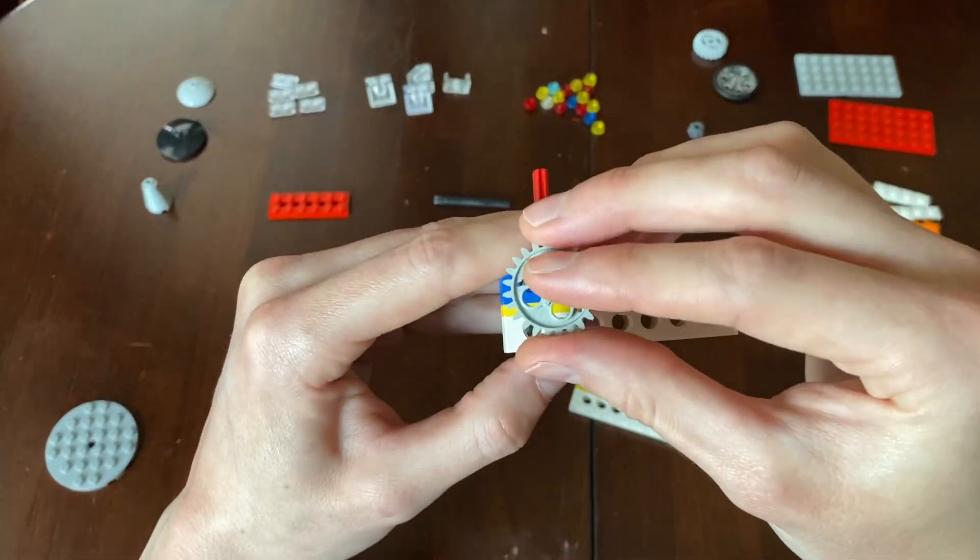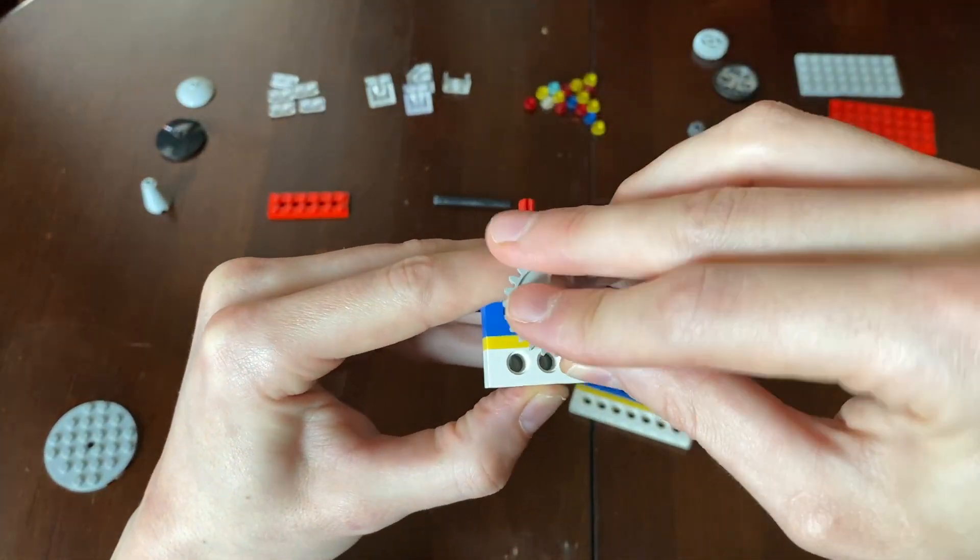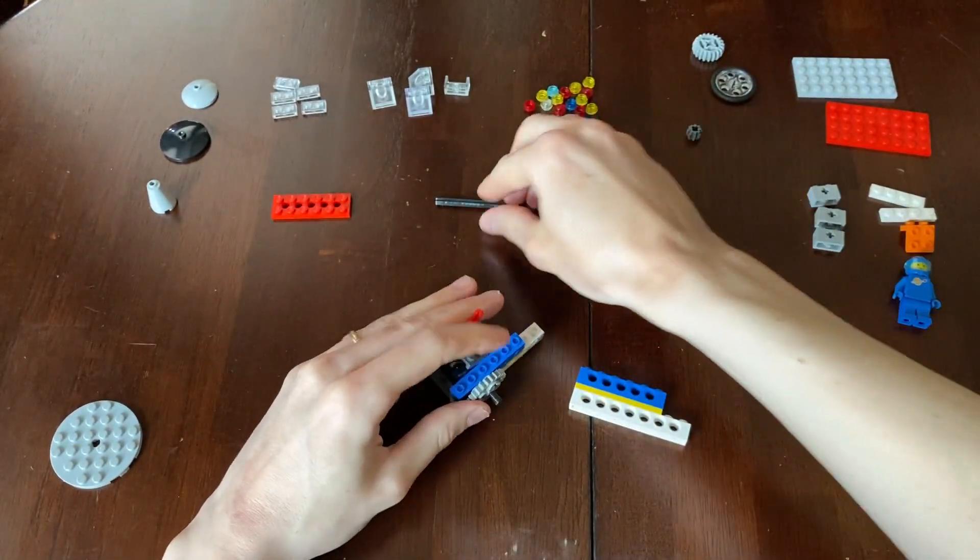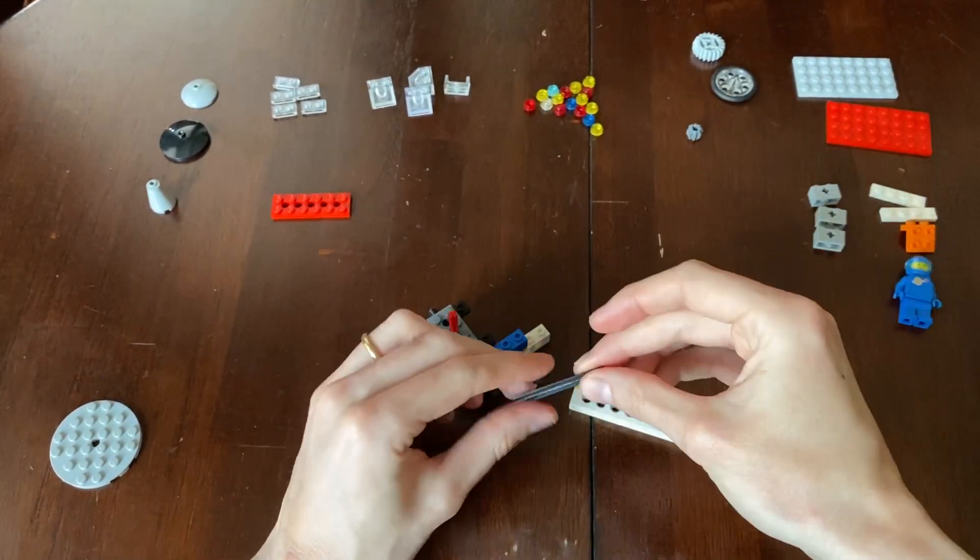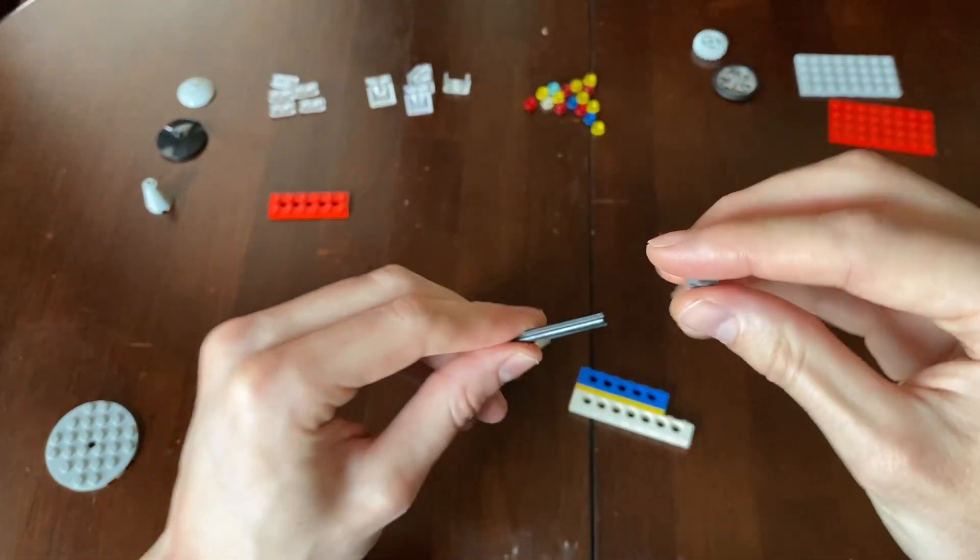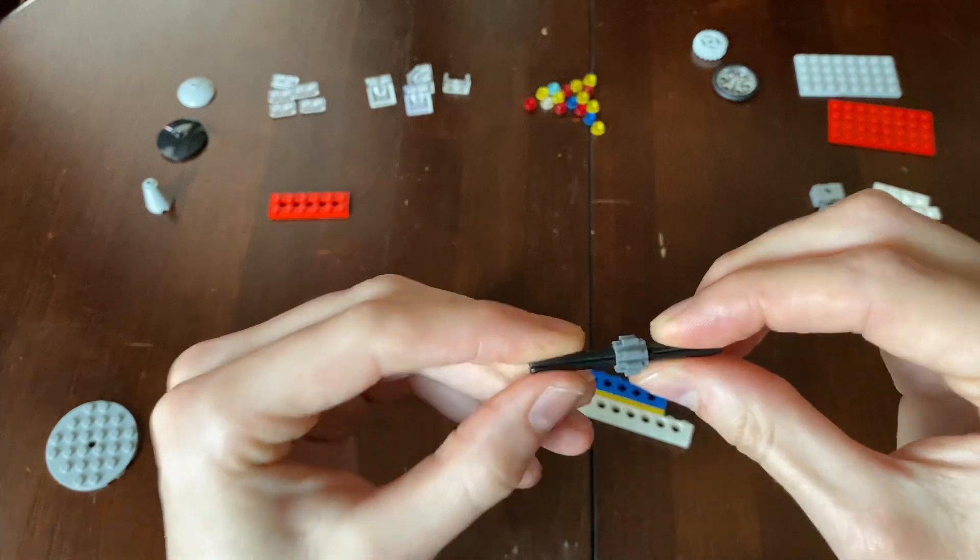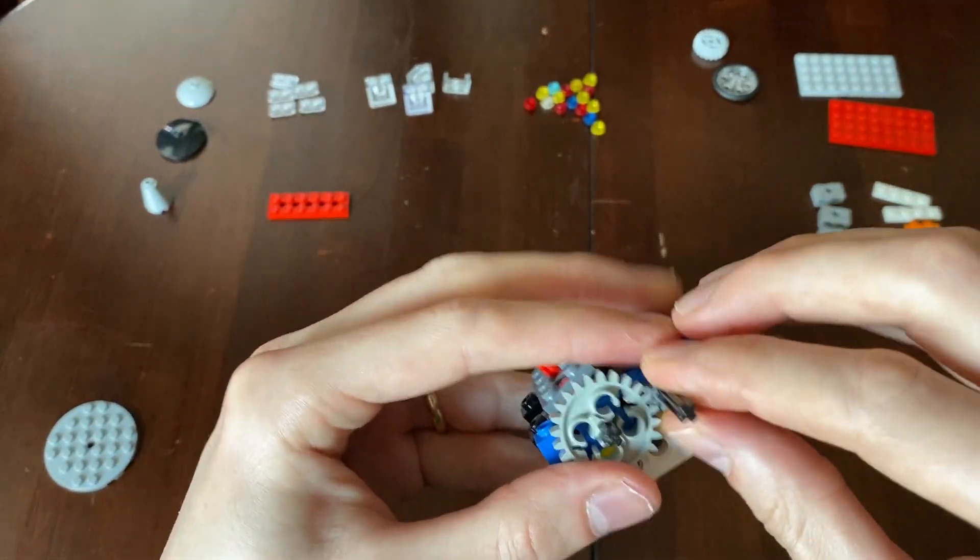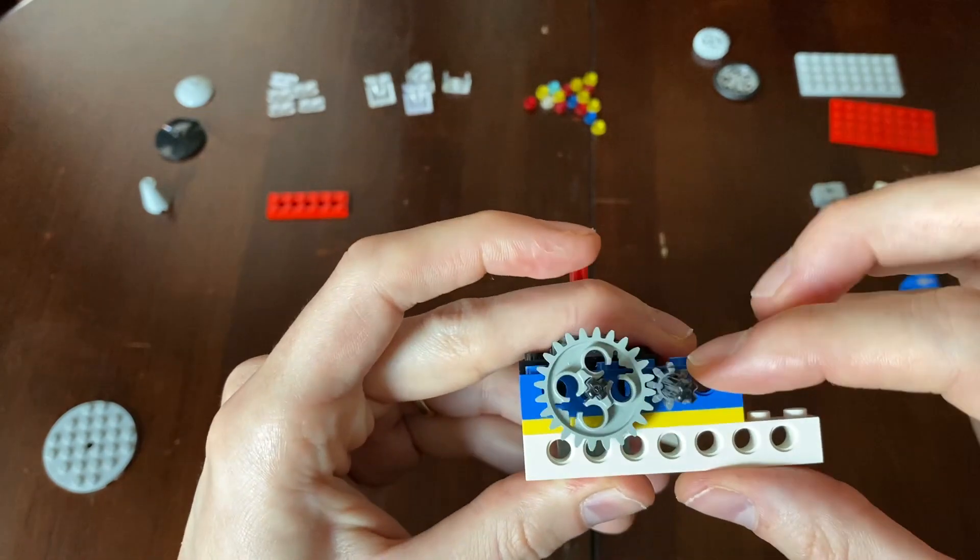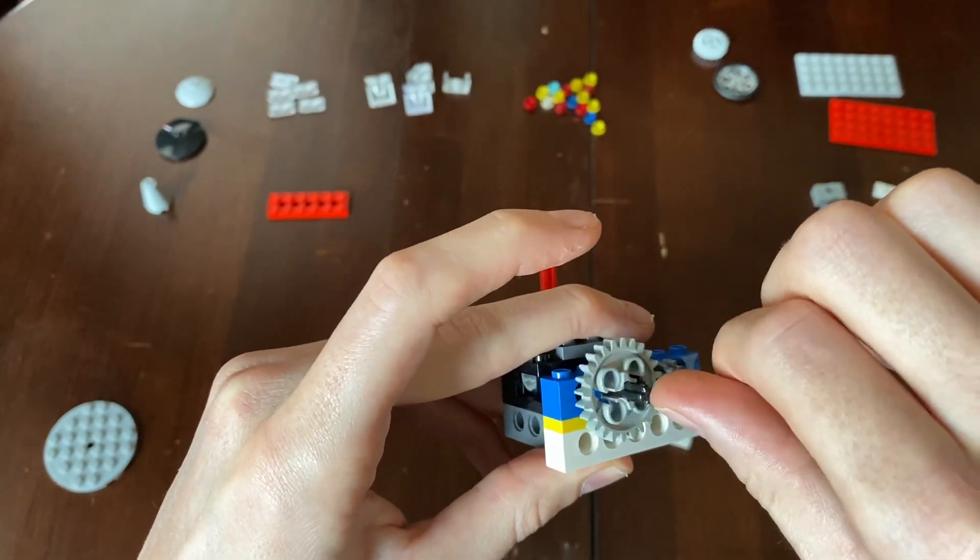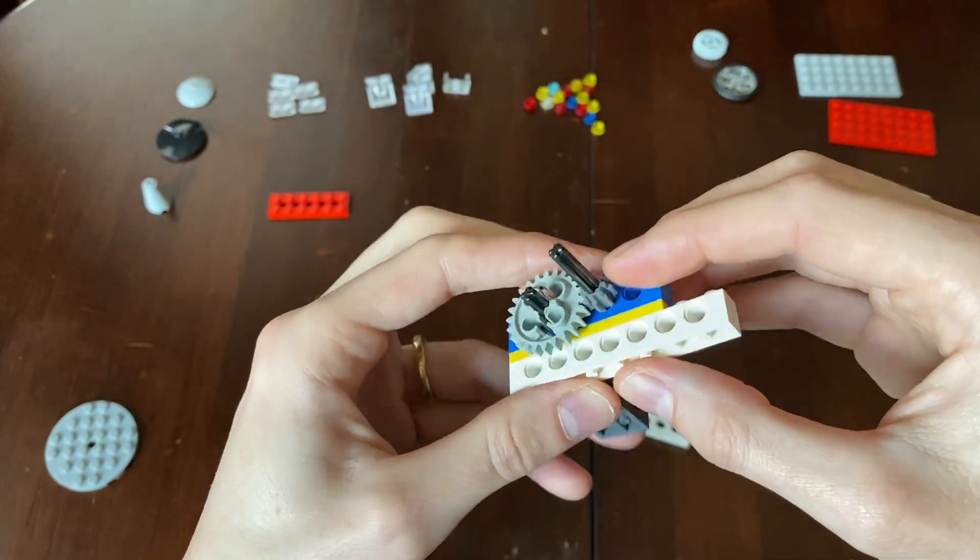Take this gear, put this gear on here. We're going to take our last axle and this small gear. Stick it on like that with space on both sides. Pop it right through here. Boom. Perfect.